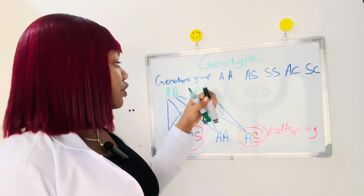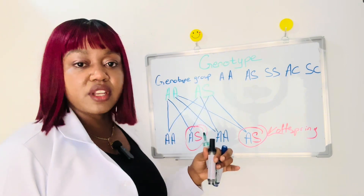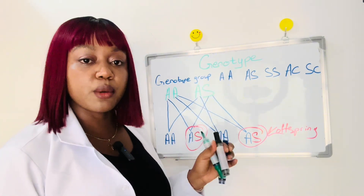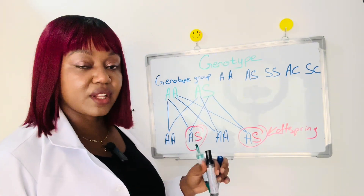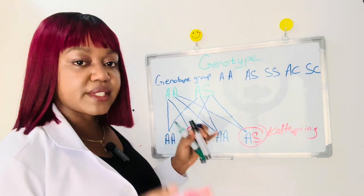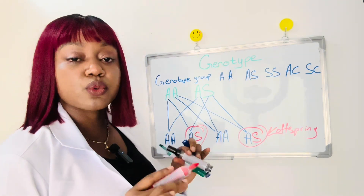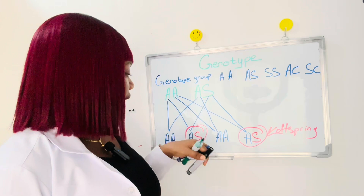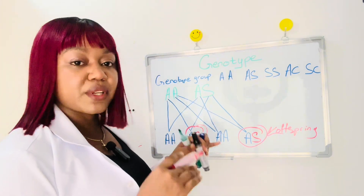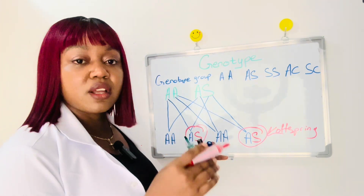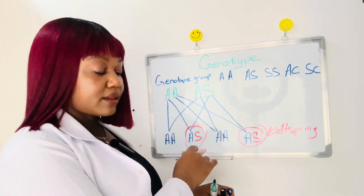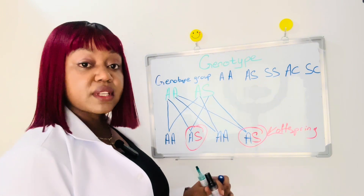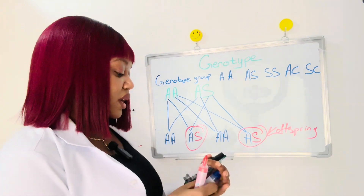So in this situation, if you are a healthy individual, it's good. You can get married to anyone and the babies will all be safe. Your offspring will all be healthy and safe. But among them, you have a 50% chance of not passing on the sickle cell trait, and the other 50% will have the sickle cell trait.